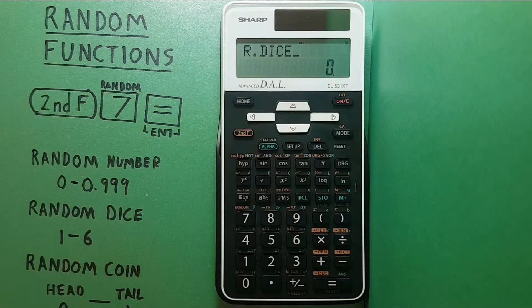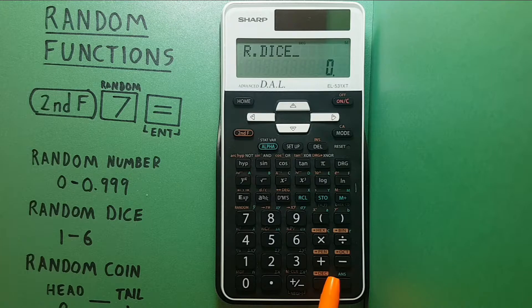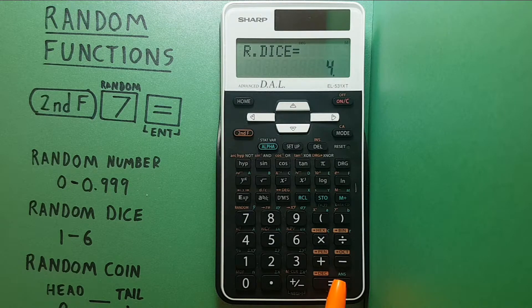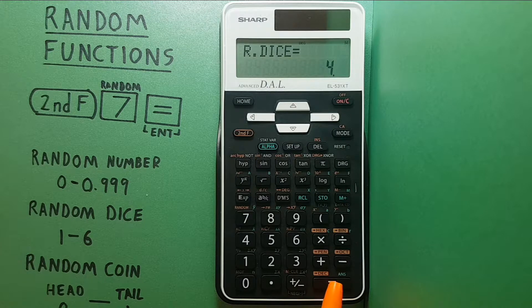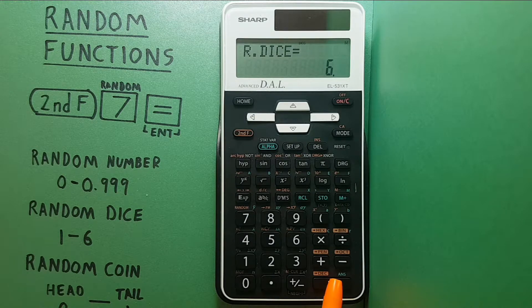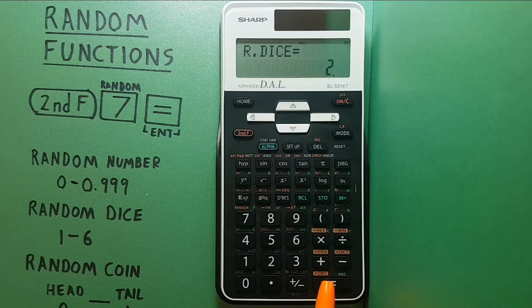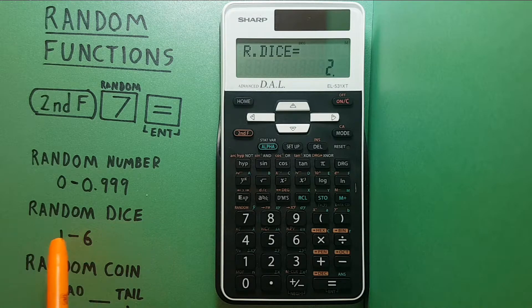Now we see our dice at the top and zero. So we press equals again and we get a six and we can keep going to roll our dice. This time we get four, six again, four again, two. As you can see these are random numbers between one and six.